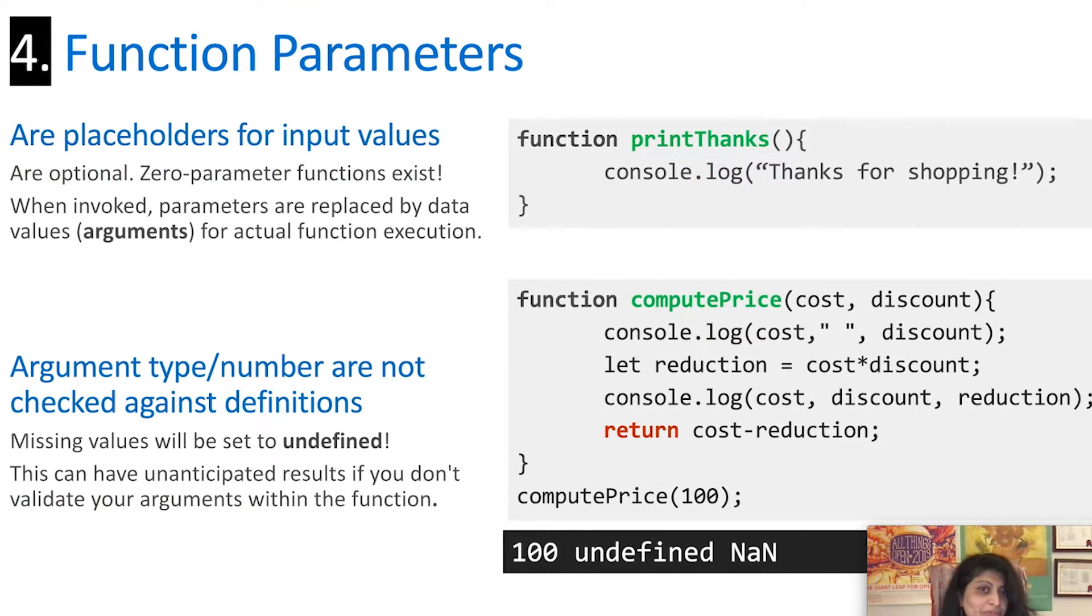All right, onto item number four. We're really roaring through this, aren't we? Remember how I told you functions have a name? They can take parameters as placeholders for inputs and they can return a result. Let's talk a little bit about the parameter side. Parameters are placeholders for input values. You can think of them as variable names that are used in the code, the definition of the function as placeholders for the execution. When you actually invoke the function, you will pass arguments, actual values that will replace every location of the parameter when you execute the function itself. Parameters are optional. You can have functions with no parameters whatsoever. For example, a print thanks function that just puts a nice friendly message. Anyone who calls it gets the exact same result.